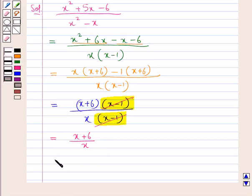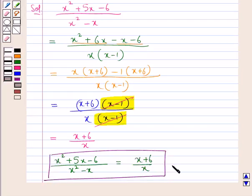Therefore the given algebraic fraction x square plus 5x minus 6 upon x square minus x is simplified as x plus 6 upon x. So this is our final answer.